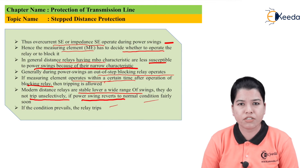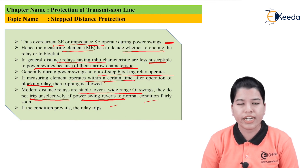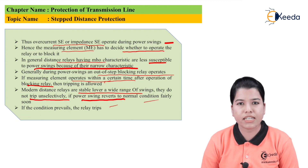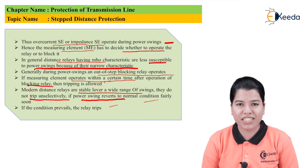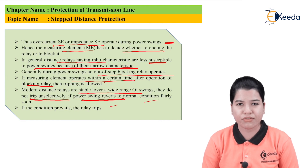In this way, we have studied the stepped distance protection scheme for the protection of transmission lines. It operates in two types: single step and three step. Basically, three-step distance protection can protect the entire transmission line. Thank you friends for watching this video. Stay tuned with eKida and do subscribe to our channel.